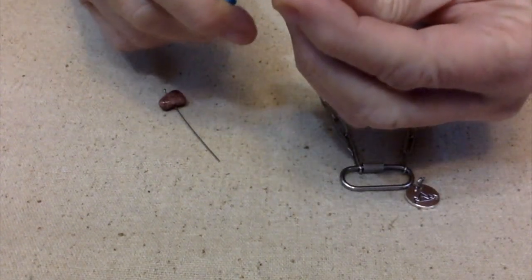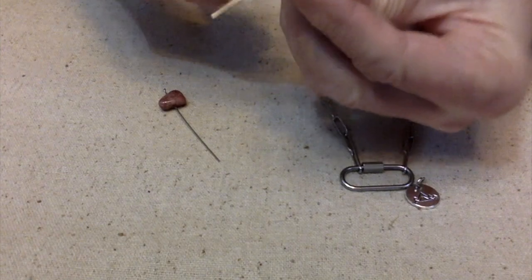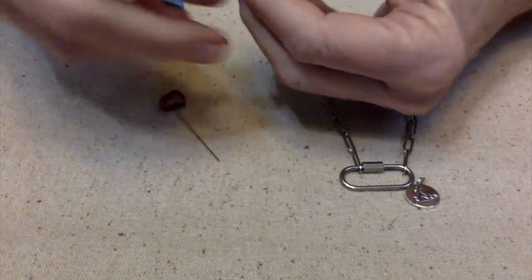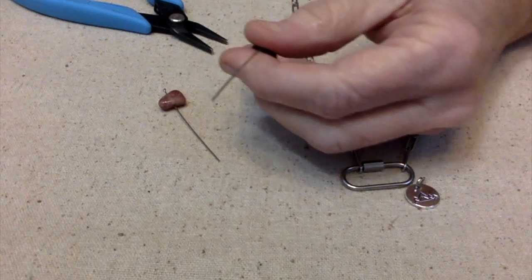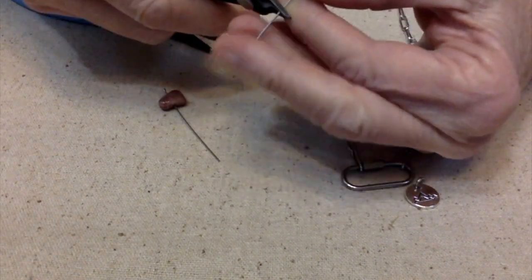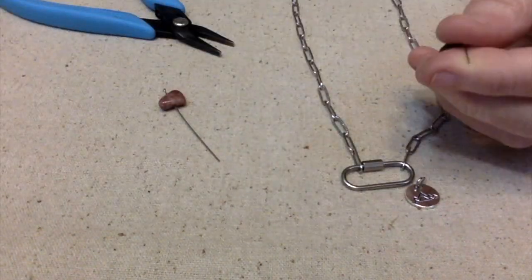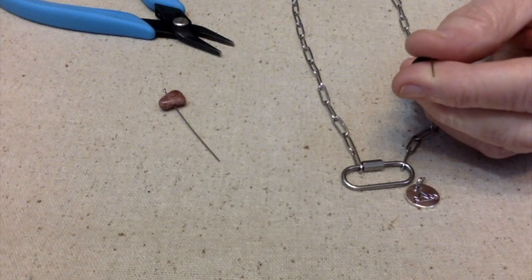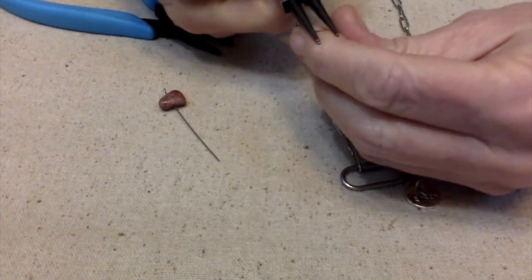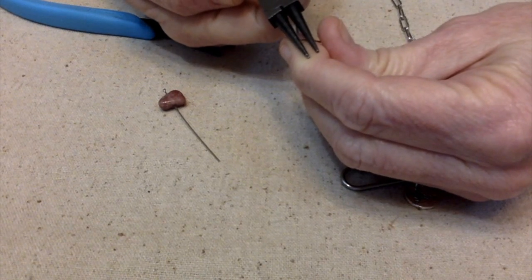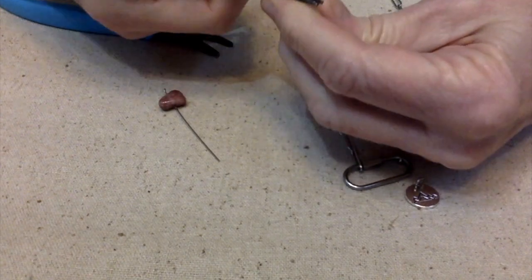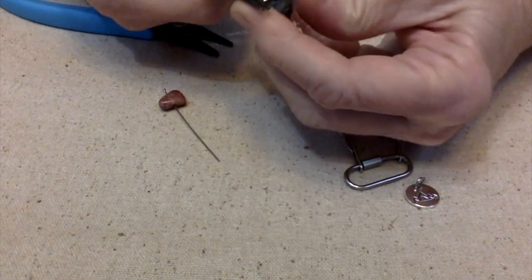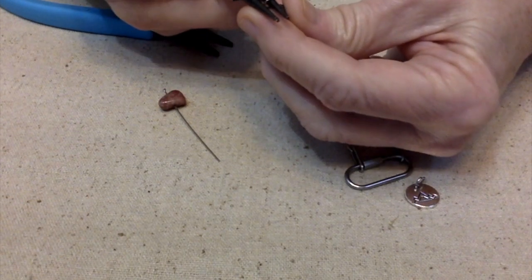It would really have to be not opened a lot in order for it to fall off, so the simple loop it is. I do need to make the loop big enough that it does go around the carabiner.